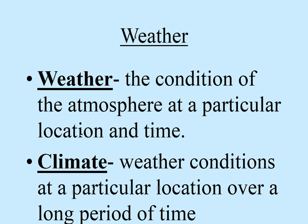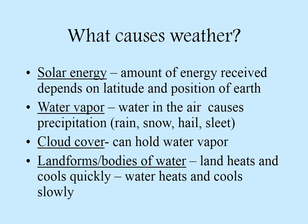Weather is the condition of the atmosphere at a particular location and time — a 24 to 72-hour period. Climate is weather conditions over a long period of time. Know the difference: weather is short-term, climate is long-term.